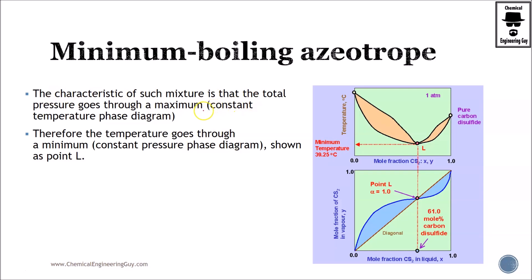Okay, so what do we have here? I stated before, minimum boiling azeotrope will have a maximum point whenever we have constant temperature, and we will have a minimum point when we have a constant pressure.